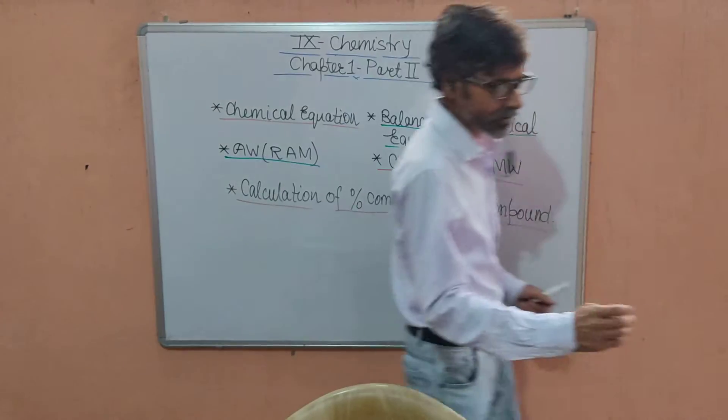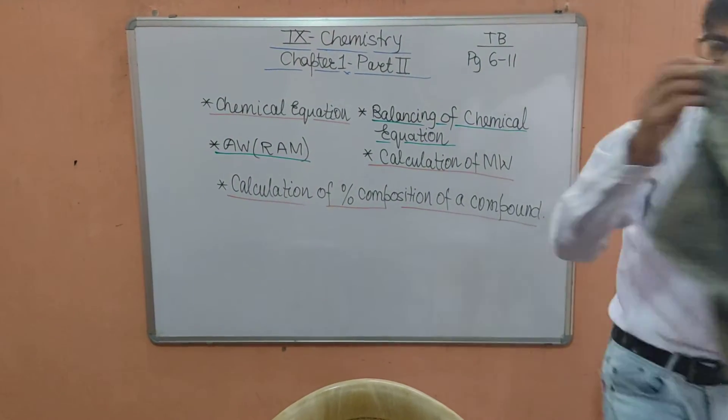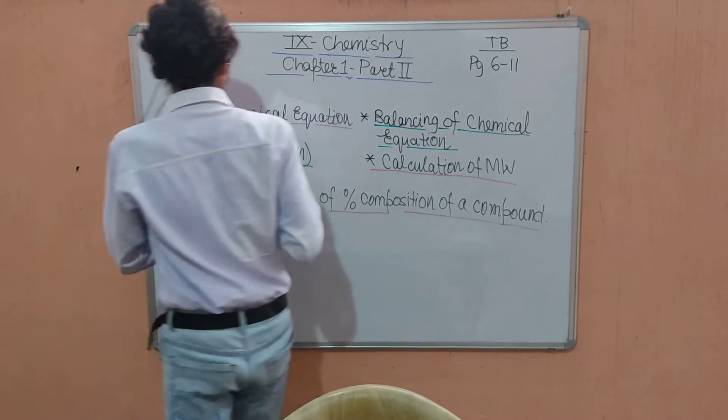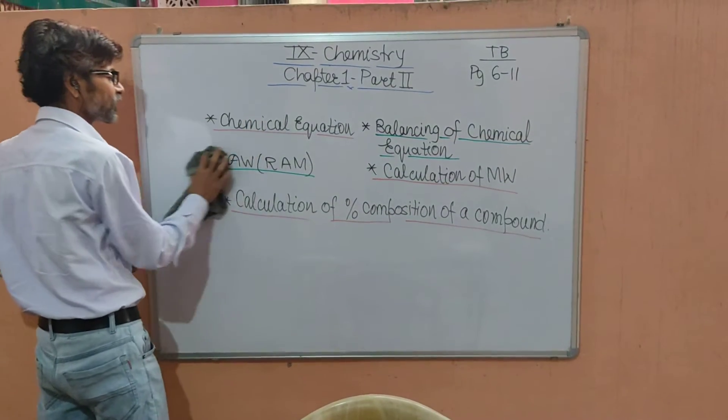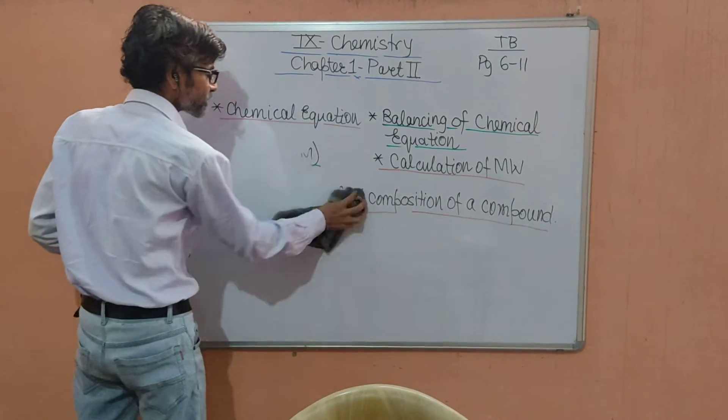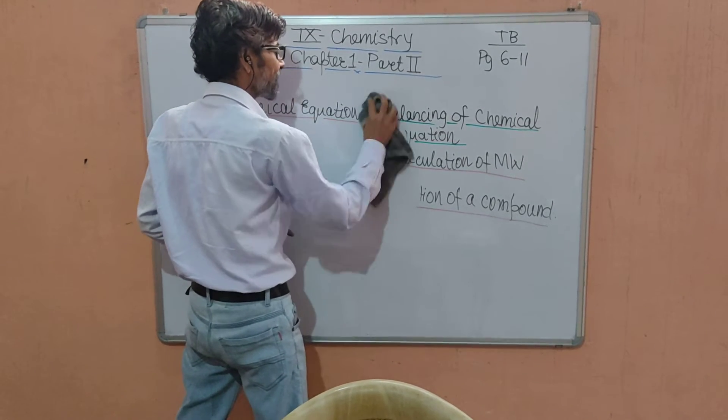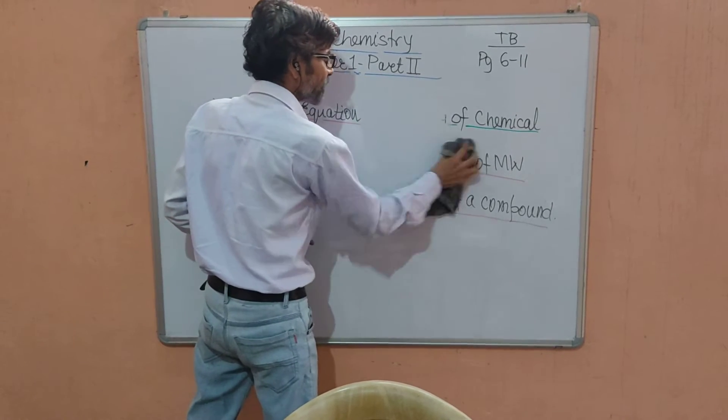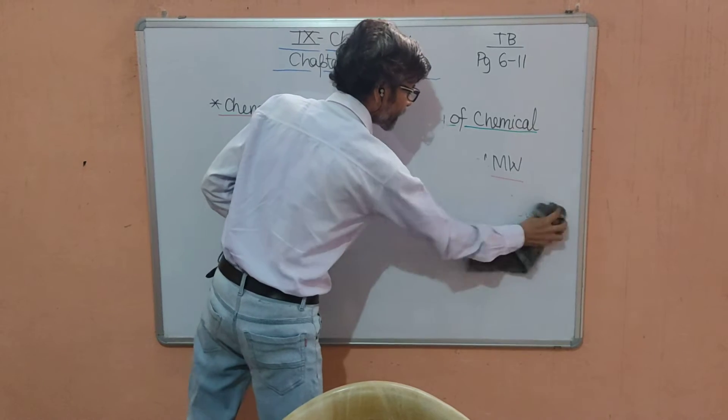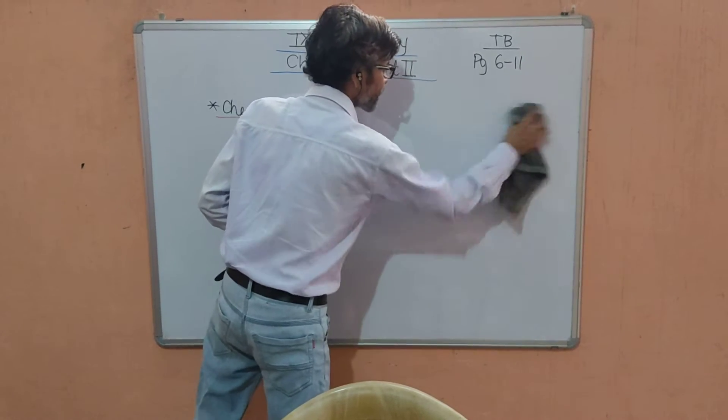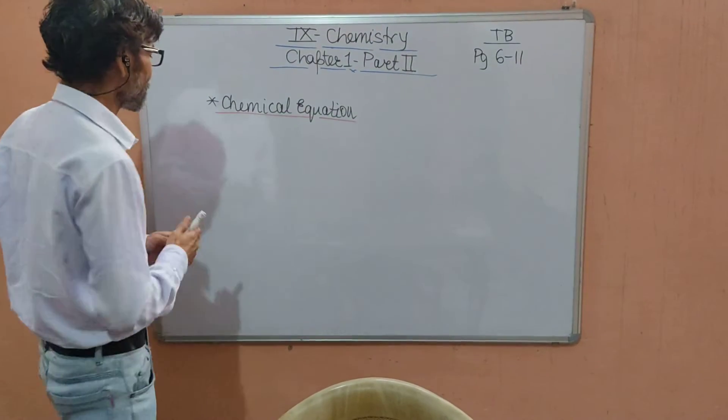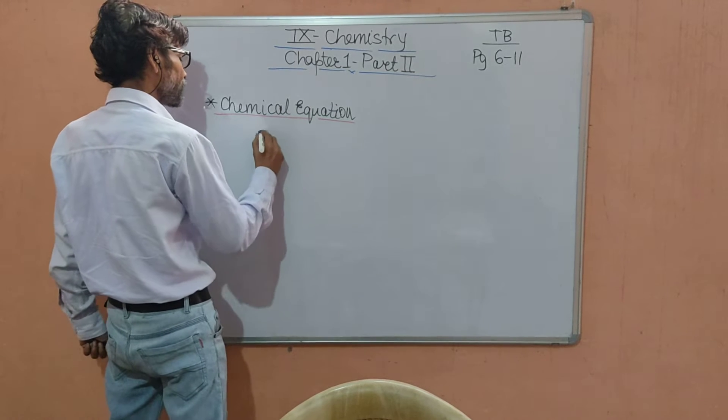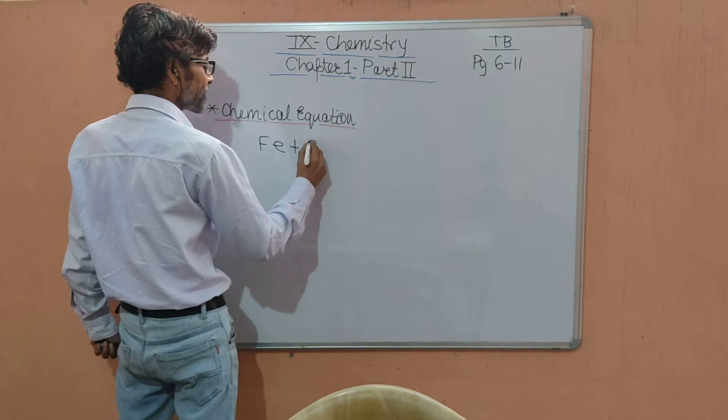Firstly, I will start my discussion with the chemical equation. Chemical equation is the representation of the chemical change taking place with the help of symbols and formulae. In the chemical equation, we write the reactants on the left hand side and write the products on the right hand side.